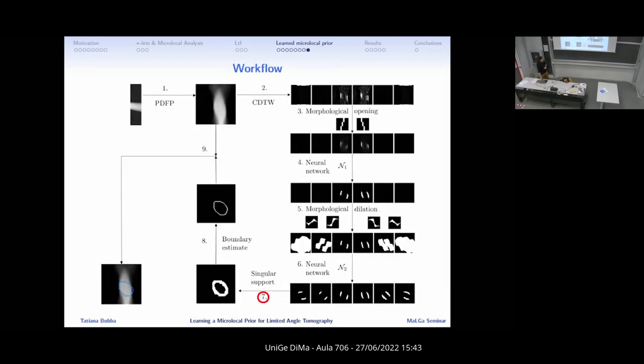Starting from the visible part, we dilate once, and we dilate twice with different morphological operations. This serves as the input for the second neural network, whose job is basically to predict the parts that are missing. Once we have these, then we have the full singular support. We apply the skeleton morphological operator, which fills out the boundary. This is used to superimpose it to the original reconstruction, and we get our final information.